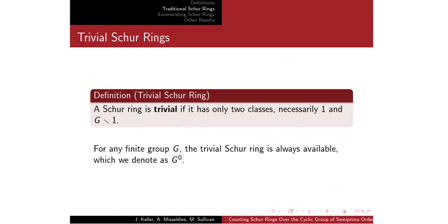There are a couple of types of Schur rings. I'll identify what we call traditional Schur rings, the first of which is the trivial Schur ring. In the trivial Schur ring, it only has two classes: the first one has to be the identity, since the identity is by itself by definition, and then the rest is just everything else in G. For any finite group G, there's always a trivial Schur ring. We'll see later that it's unique, and it's denoted with the superscript G⁰.